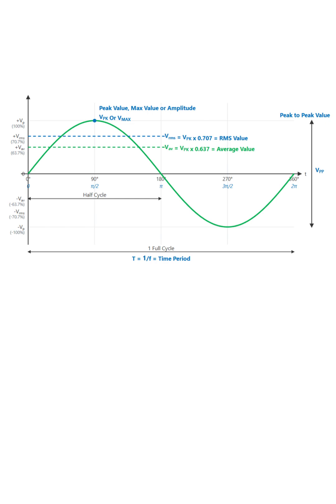So, to quickly recap, the peak value is the maximum, peak-to-peak is the total swing, and the RMS value is the effective or practical value used for power calculations. Thanks for watching.